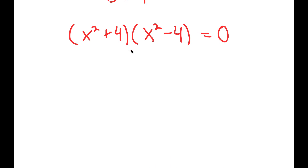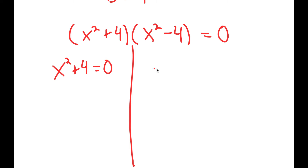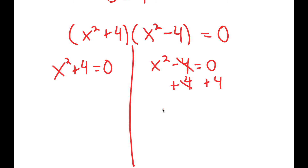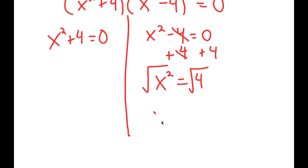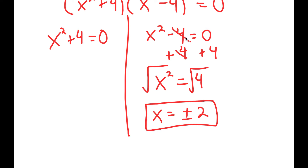From here, this gives me two equations: x squared plus 4 equals 0, and x squared minus 4 equals 0. Let's first start with x squared minus 4 equals 0. If I add 4 on both sides, I get x squared is equal to 4. Taking the square root, the square root of x squared is x, and the square root of 4 is positive or negative 2. So I have two solutions of x from this equation.